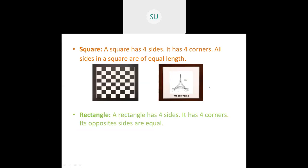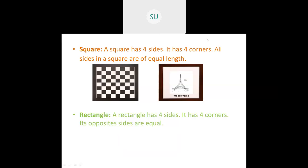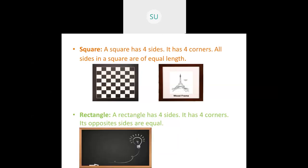Then we saw the next shape — a rectangle. A rectangle also has four sides and four corners, but its opposite sides are equal. It has two long sides called the length and two shorter sides called the width. Examples of rectangles include a blackboard, a door, windows, and cupboards.